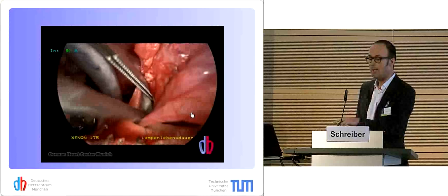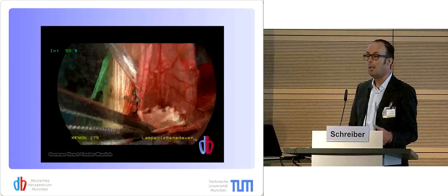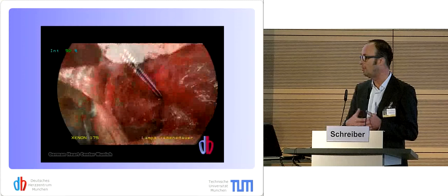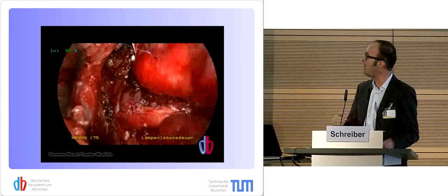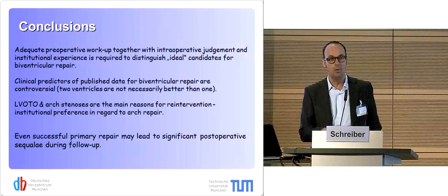In the proximal aspect, the forceps is going right down into the descending aorta. We patch it — like in a Norwood operation. The idea is that if the distance is too wide, you have at least a short segment of native material in the back, hopefully allowing the arch to grow.